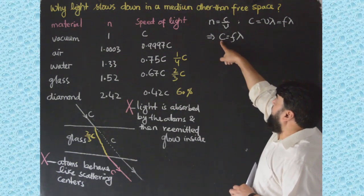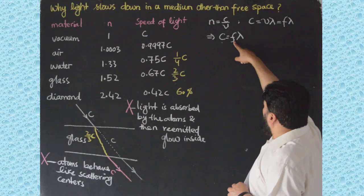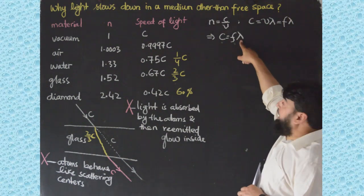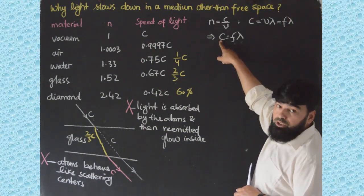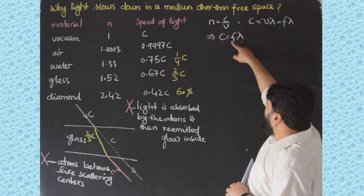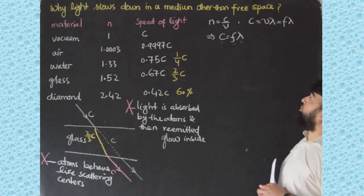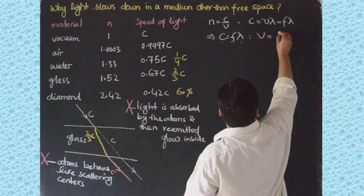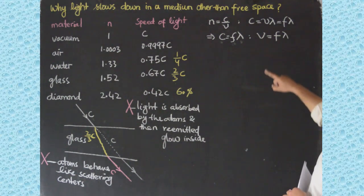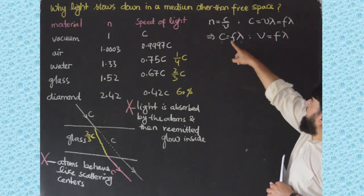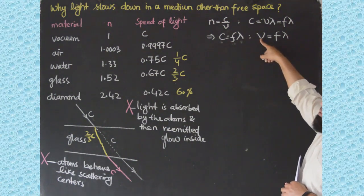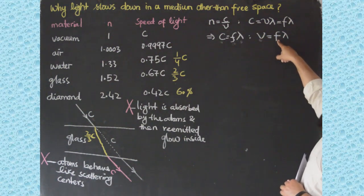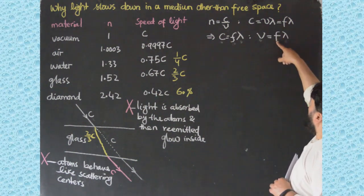In vacuum, c equals f times lambda. If frequency were reduced, then lambda would grow to keep the speed constant. Conversely, if lambda were reduced, frequency would increase. But inside a medium, we have V equals f times lambda, where the speed V is not constant — it differs in different media. So when V lowers, we need to determine whether frequency or wavelength — or both — lower.